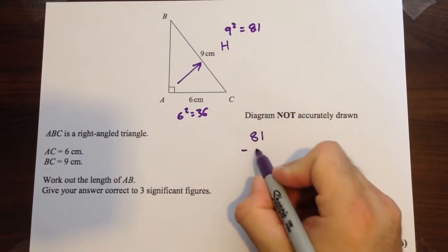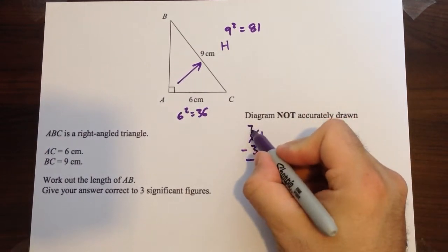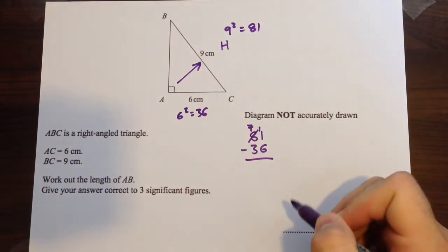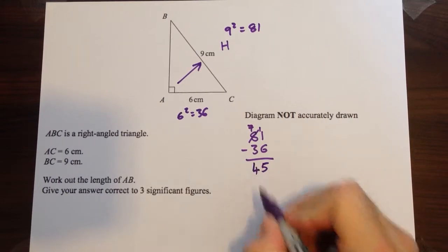So, 81 take away 36, 1 take away 6 you can't do, so we're going to borrow from there, 11 take away 6 is 5, 7 take away 3 is 4.